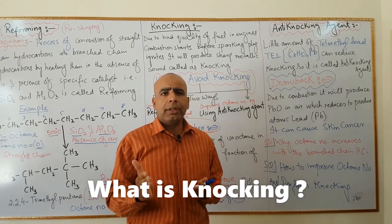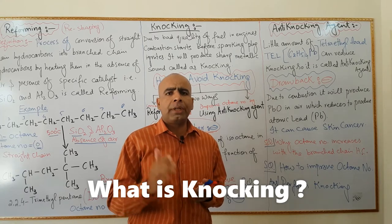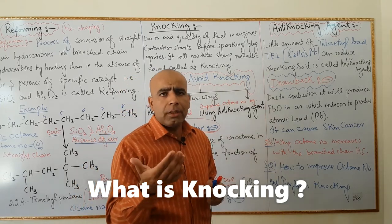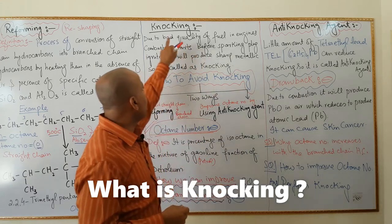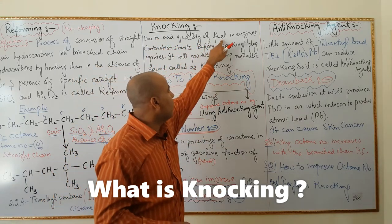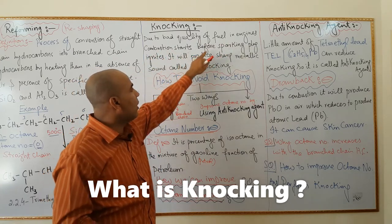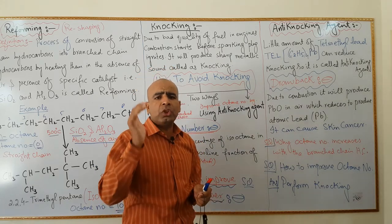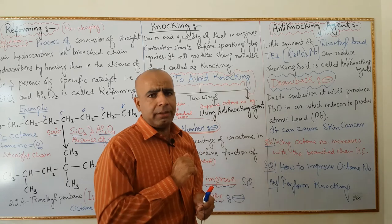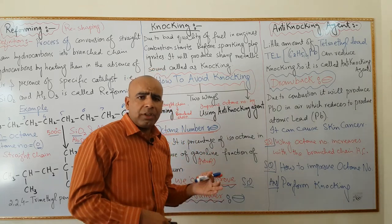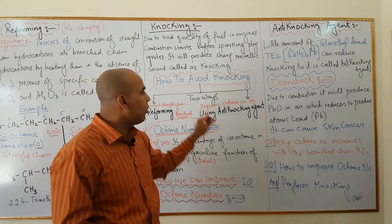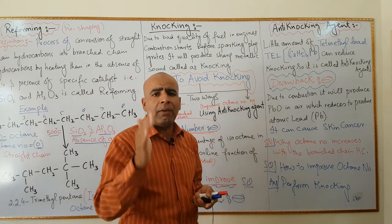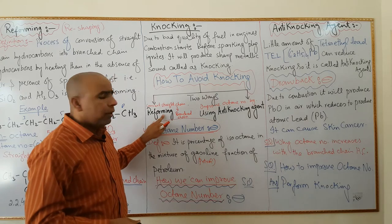The next question is how we can improve octane number. First we need to understand knocking. Due to bad quality fuel, combustion in the engine starts before the sparking plug ignites, producing a sharp metallic sound called knocking. There are two ways to avoid knocking.